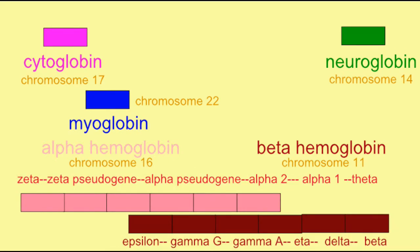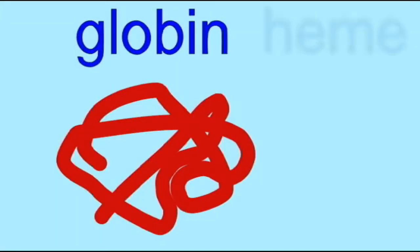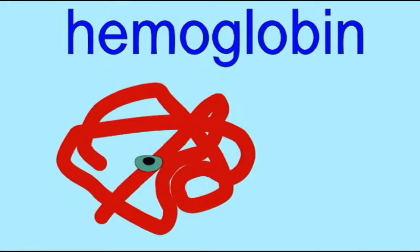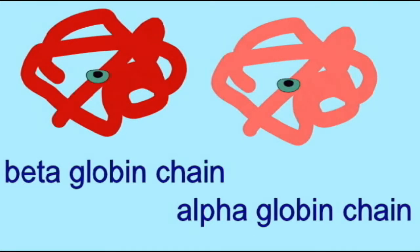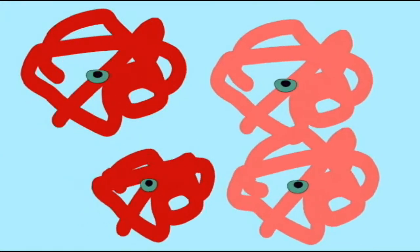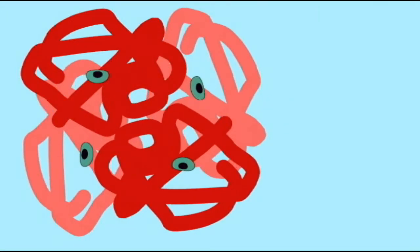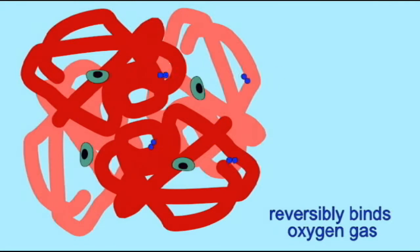The hemoglobin found in human red blood cells is composed of two alpha chains and two beta chains. These then form the quaternary structure with four subunits, where the heme unit binds oxygen reversibly. It can bind oxygen and then release it, while the globin portion can bind carbon dioxide.